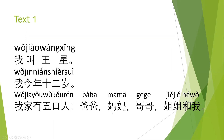我家有五口人。爸爸，妈妈，哥哥，姐姐和我。There are five people in my family. 口 is the measure word for people — you put it in front of people. 爸爸 — dad, 妈妈 — mom, 哥哥 — older brother, 姐姐 — older sister, 和我 — and me.